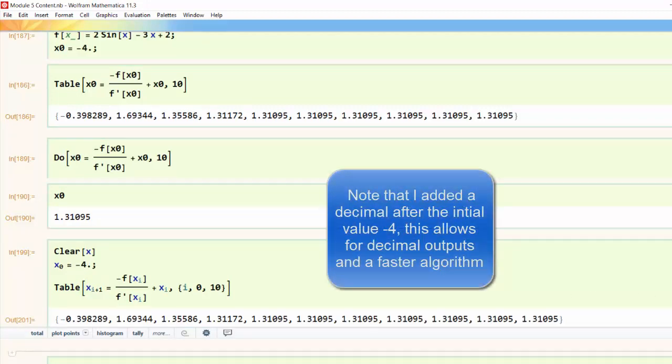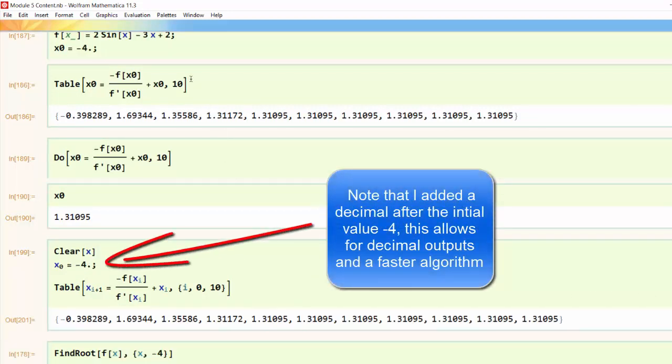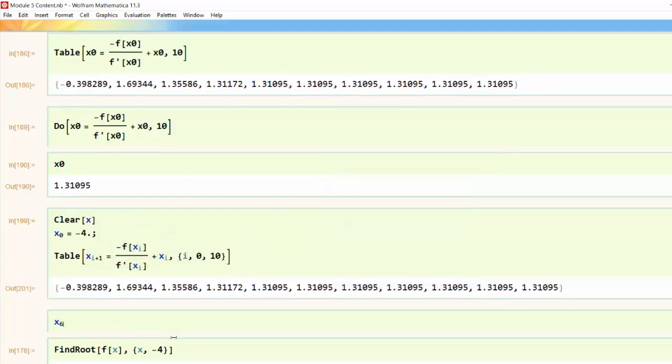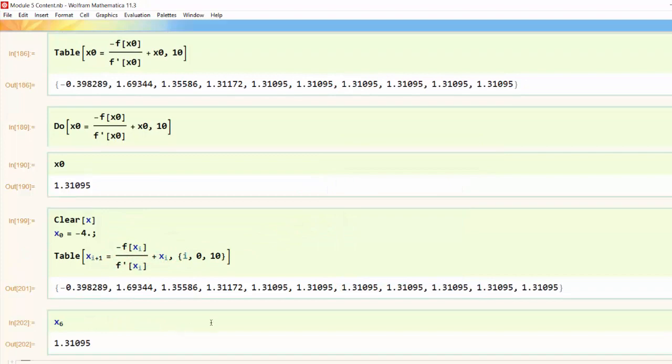Now the only difference from this version of table versus the previous version of table is now if I were to type x sub 6 for example I can see that the x₆ value is actually stored with that name.